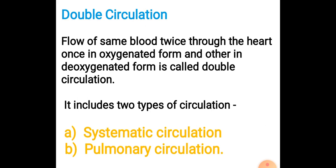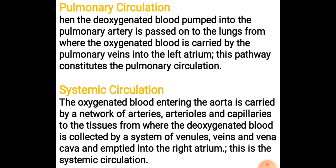Double circulation is a characteristic feature of human beings. Here, blood comes to the heart twice in one cardiac cycle — once in deoxygenated form, and after oxygenation in the lungs, it returns in oxygenated form to the left side. Double circulation includes two types: systemic circulation and pulmonary circulation.